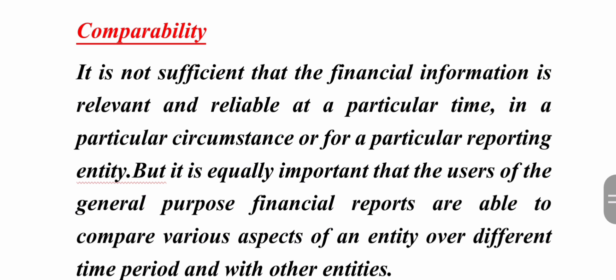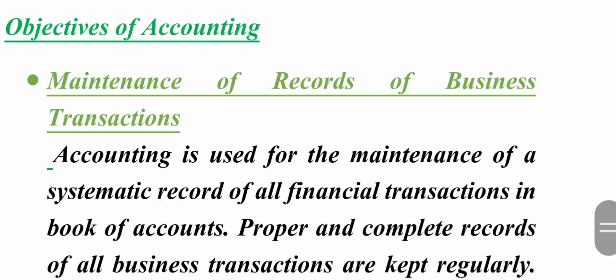This is called qualitative characteristics of accounting — this is how you should check for 4 marks. The important topics to check are: definition of accounting, qualitative characteristics of accounting, and objectives of accounting. We have 4 marks and 4 points in the important title.